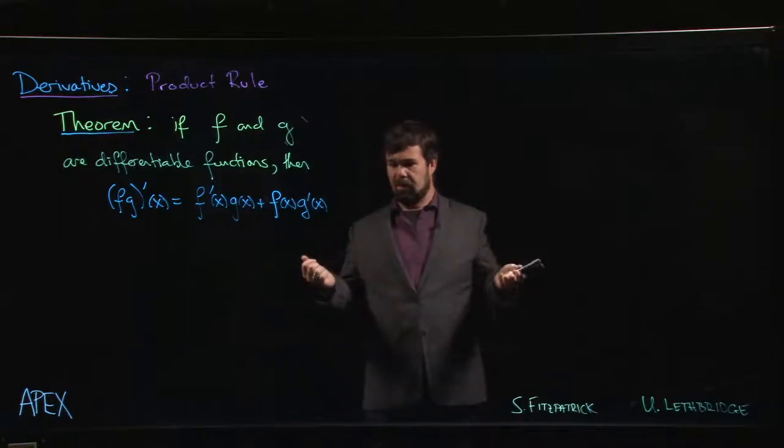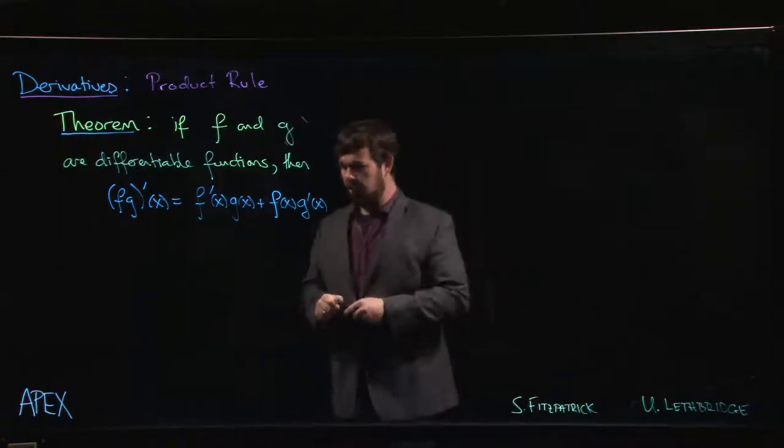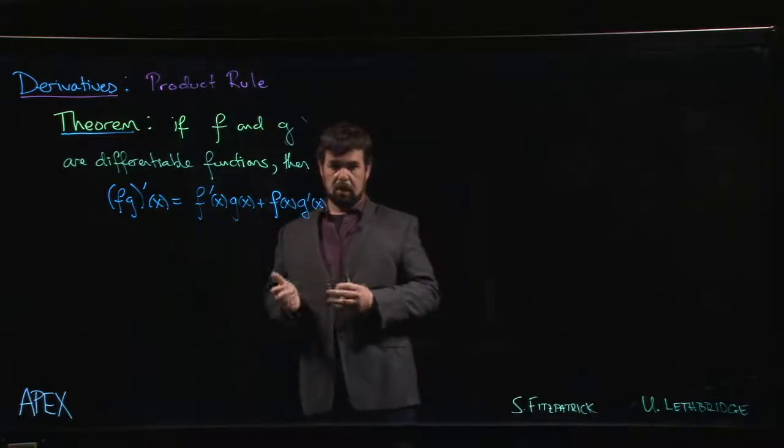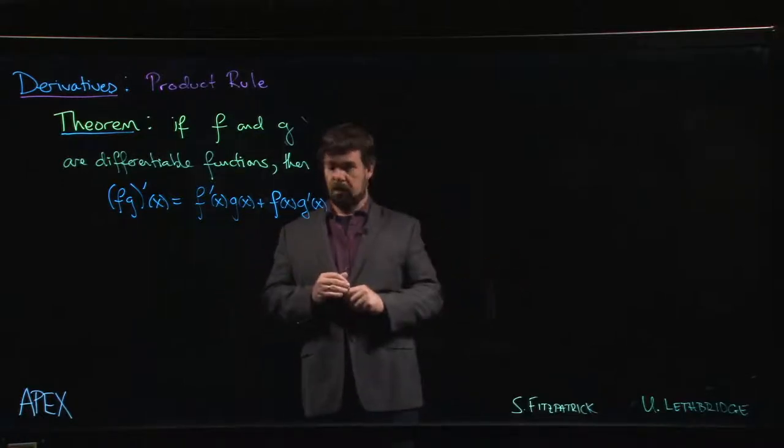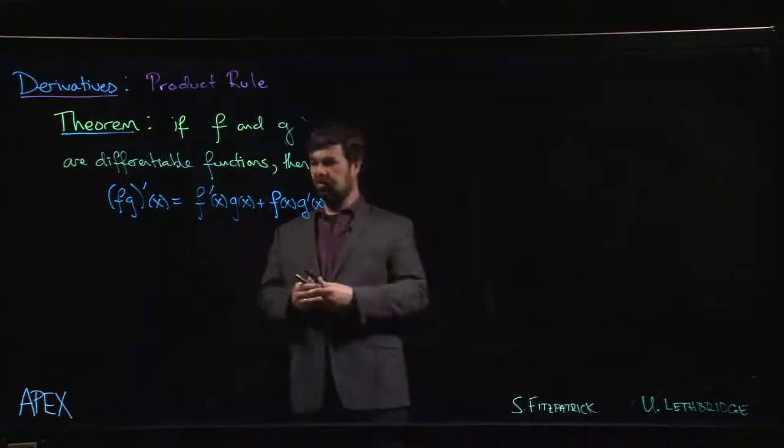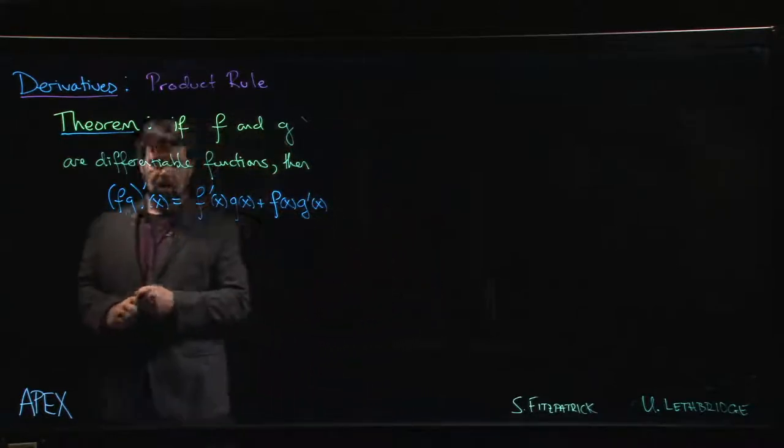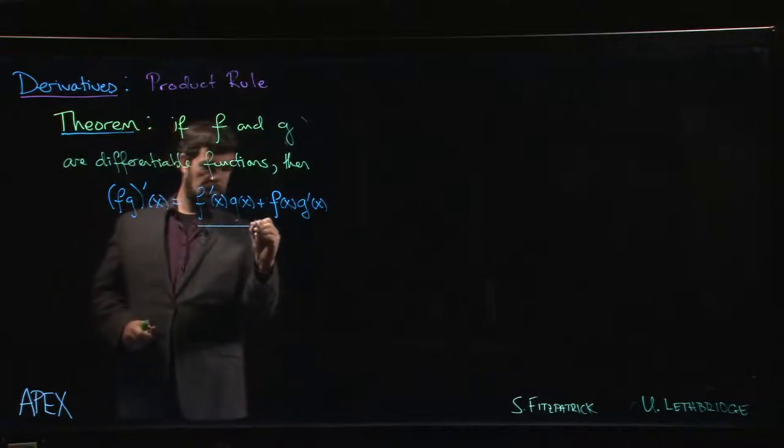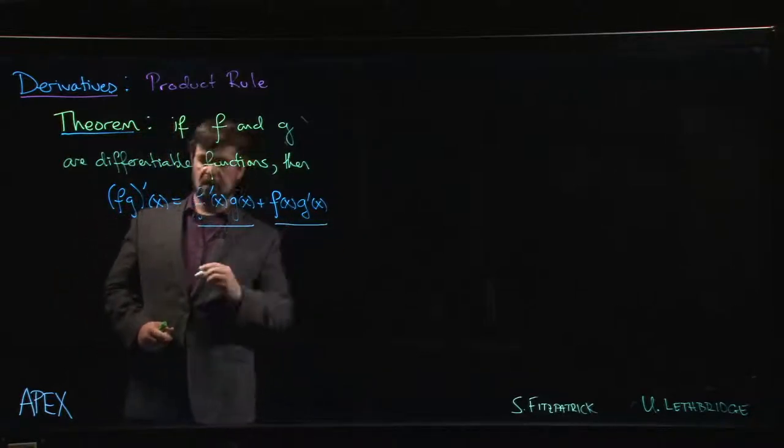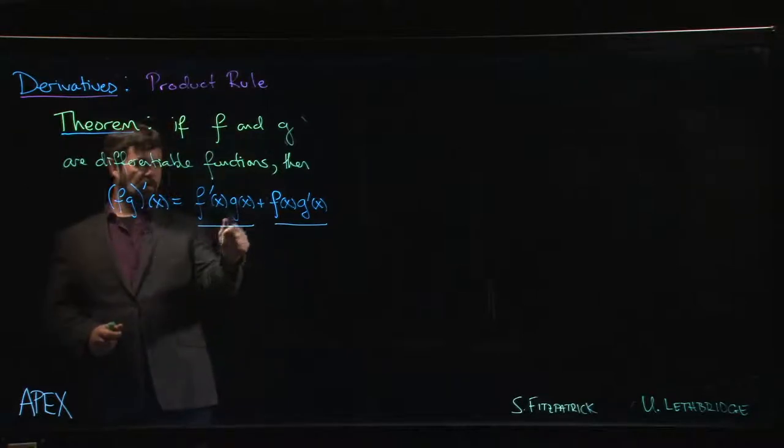However, we know that if you have the limit of a product of two functions, you can simply take the product of the two limits. That's not the case for derivatives. You'll notice that there are two terms. If you take the derivative of a product of two functions, you get two terms: one term that involves the derivative of the first function and another term involving the derivative of the second.